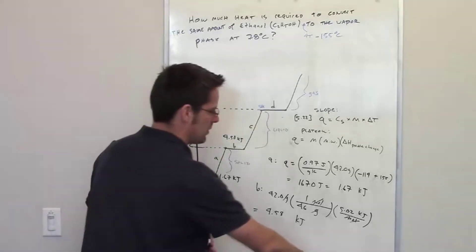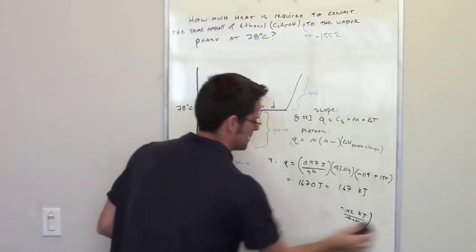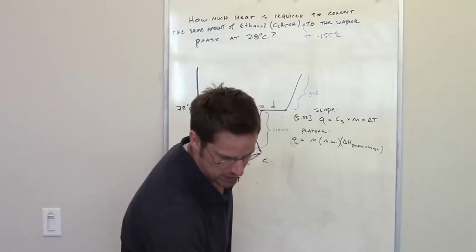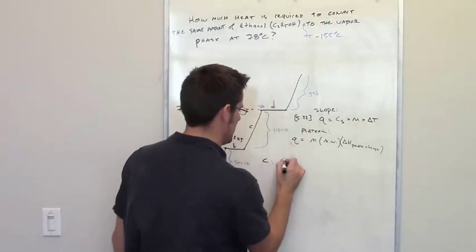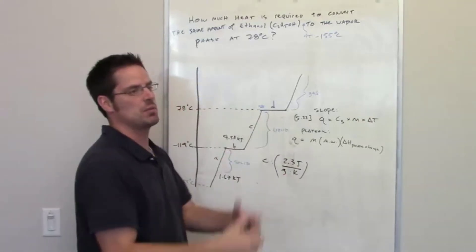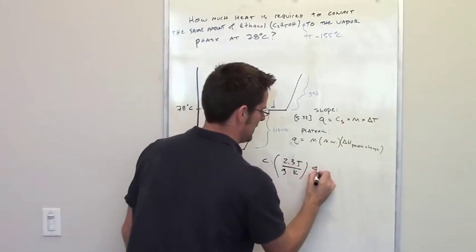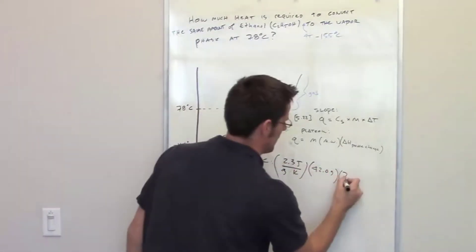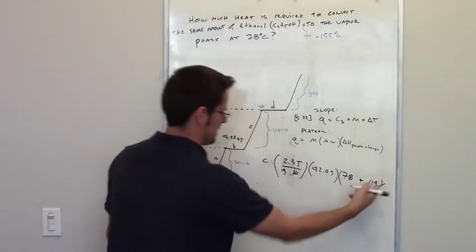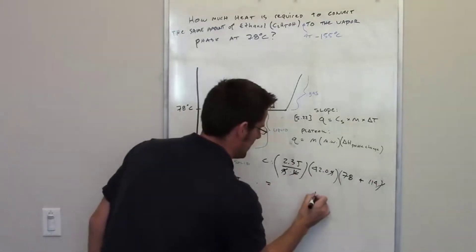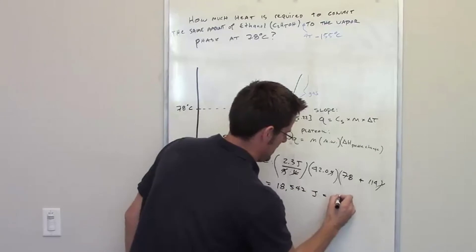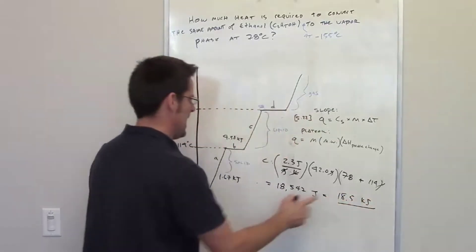Now up slope C. Using the slope equation with the specific heat of liquid ethanol — 2.3 joules per gram Kelvin — multiplied by 42 grams, multiplied by delta T. Delta T is 78 minus negative 114, which is plus 192. Kelvins cancel with kelvins, grams cancel with grams, and the calculator gives 18,547 joules, which is 18.5 kilojoules — the cost of going up slope C.